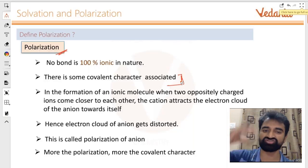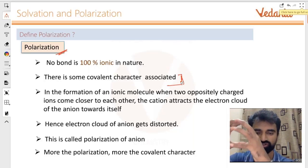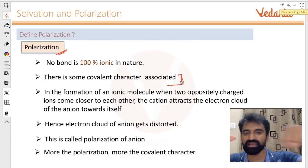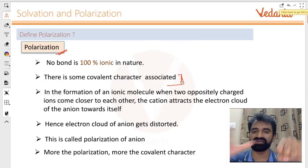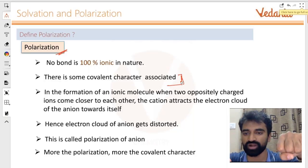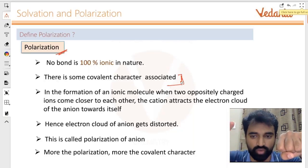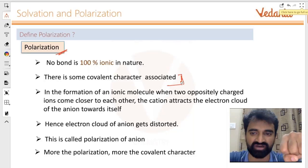Basically, what happens is I have a very huge anion over here which has a lot of electrons around it, and all these electrons will repel each other, so they are already expanding. If I bring a positive charge near it, they will attract each other and I will have an ionic bond. But additionally, all these electrons which want to go away from each other, which are only held together because there is a small nucleus in the anion, will be attracted towards this positive charge.